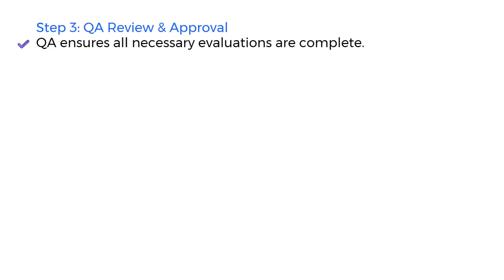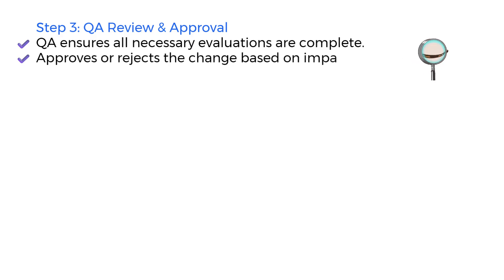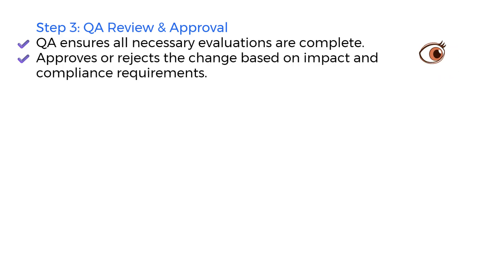Step 3: QA Review and Approval. Once the impact is fully assessed, QA steps in as the gatekeeper. QA reviews all documentation and evaluations to ensure risks have been addressed, validation needs are identified, regulatory impact is considered, and all departments have weighed in. Then QA either approves or rejects the change — only an approved change control can proceed. If rejected, the reasons are documented and the change must be revised or cancelled.